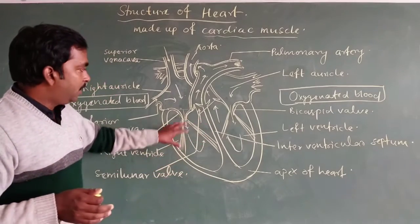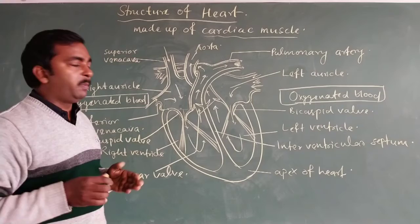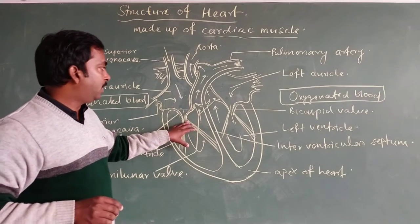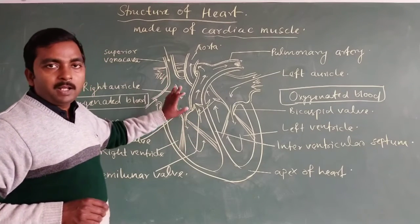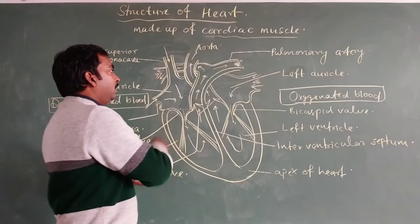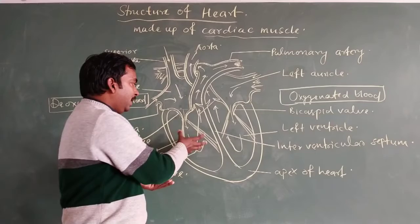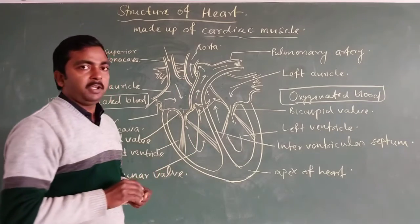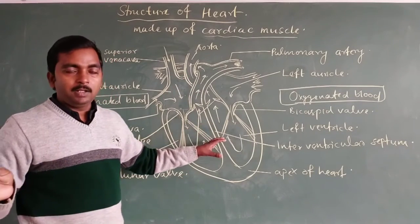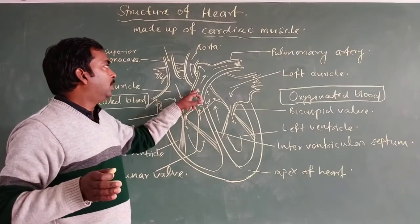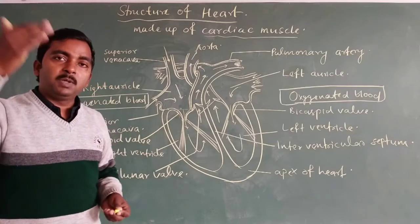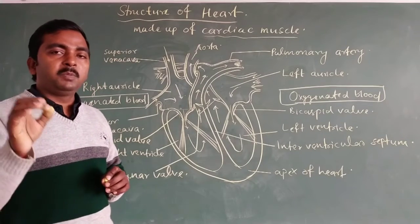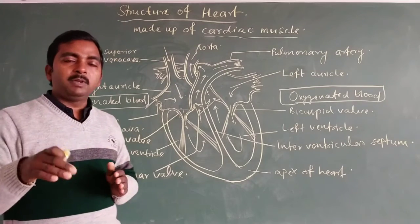During the contraction of the auricles, the ventricles remain relaxed, providing large volume inside to receive the maximum amount of blood. After dilation, the ventricles contract. Contraction of the right ventricle pushes blood into the pulmonary artery, which then transfers blood to the lungs. At the lungs, the oxygenation process takes place — oxygen enters the blood and carbon dioxide is released into the alveoli.